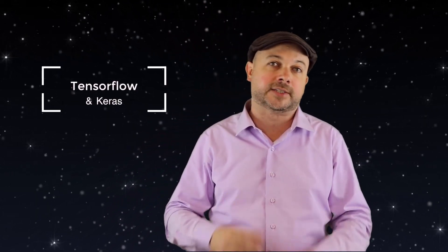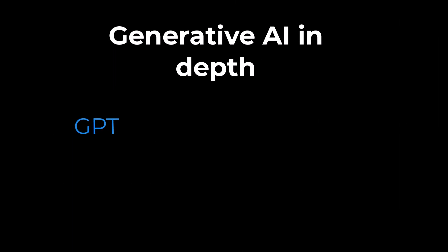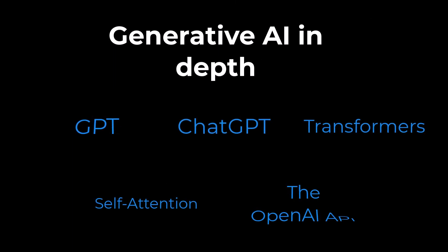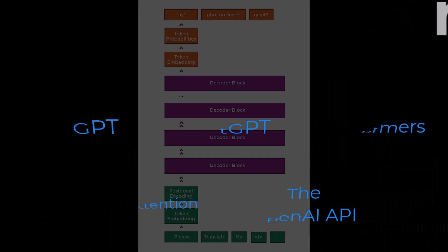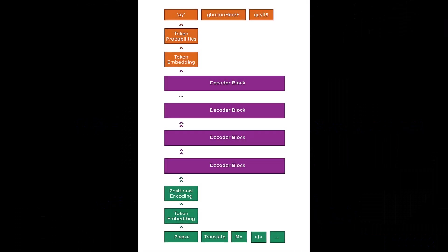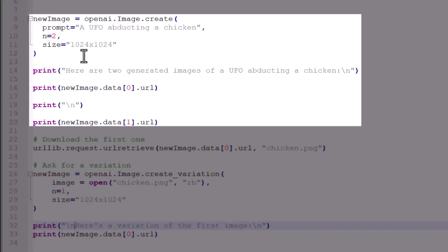We'll build real neural networks using TensorFlow and Keras. This course has also been updated with the latest information on how GPT and ChatGPT work. We'll talk about the fundamentals of transformers and how they evolved from earlier deep learning architectures.